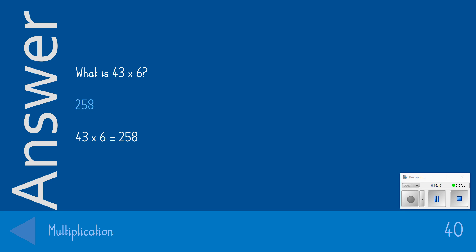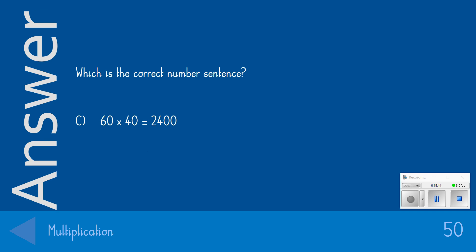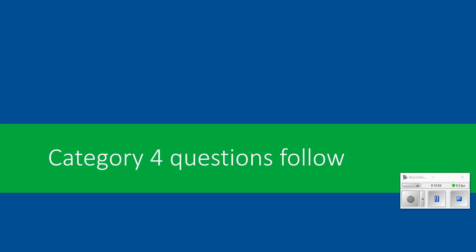Ready for our final and most difficult question of the multiplication round: which is the correct number sentence? Is it A: 4 times 25 is 120? B: 3 times 20 is 6? C: 60 times 40 is 2,400? Or D: 70 times 4 is 2,800? The answer we were looking for was C — 60 times 40 is 2,400. If you got that correct, it's a massive 50 points for you. That's the end of the multiplication round.